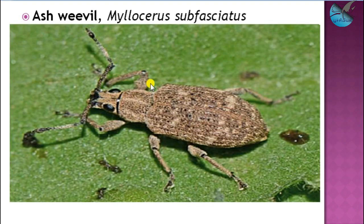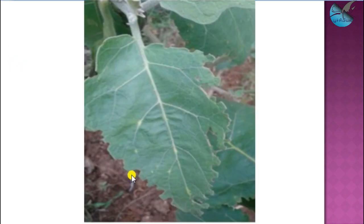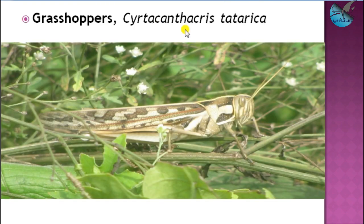Another minor insect pest is the ash weevil, Myllocerus subfasciatus, which feeds by notching the leaves in circular shapes in the terminal areas. This is the symptom of ash weevil feeding.